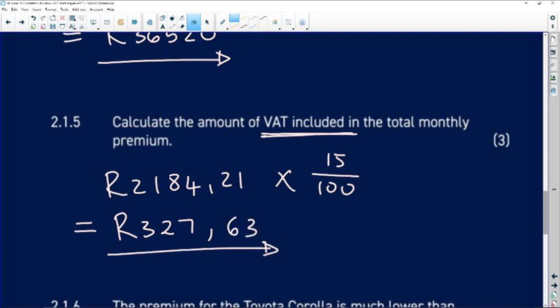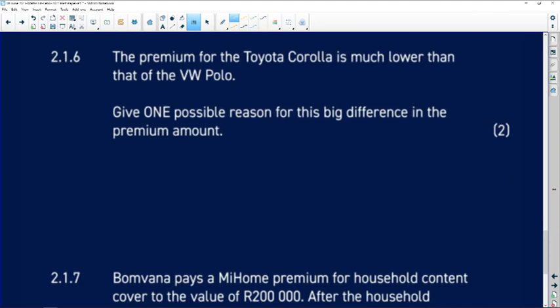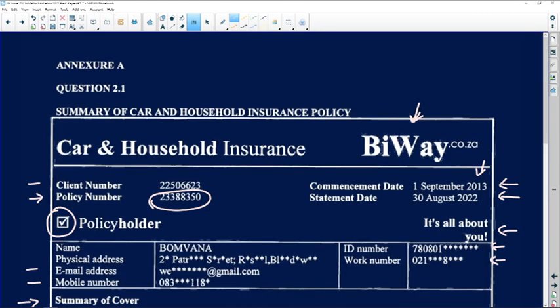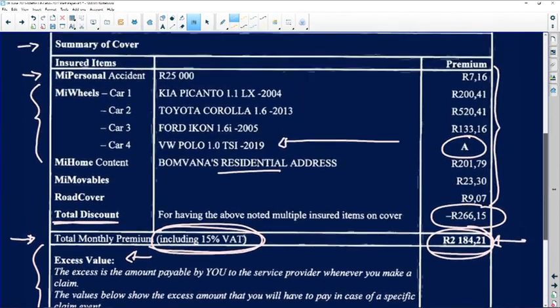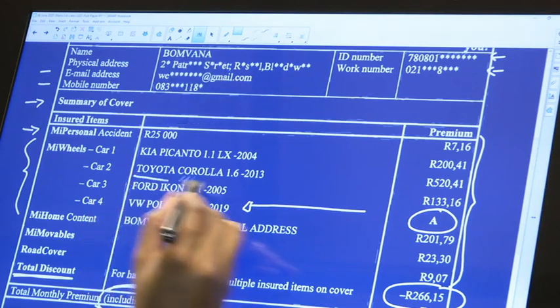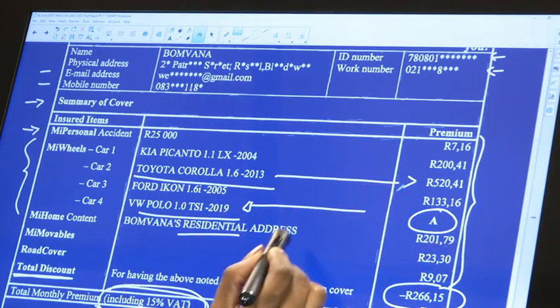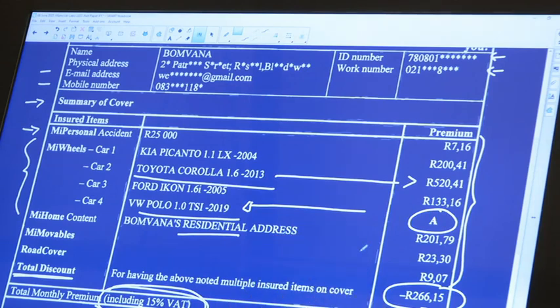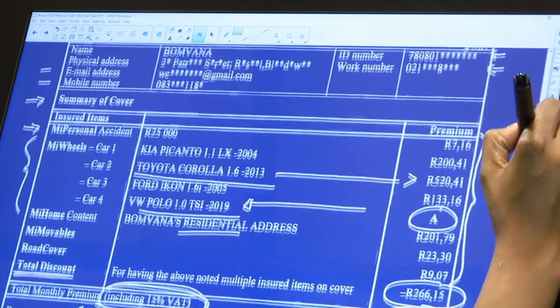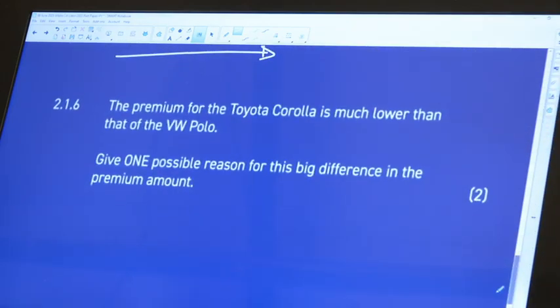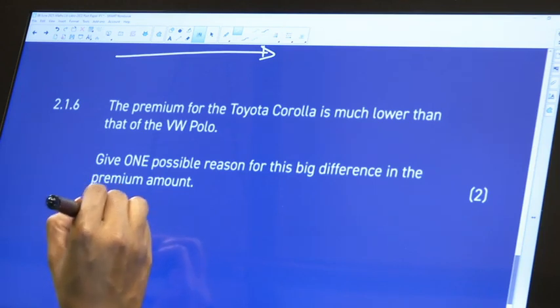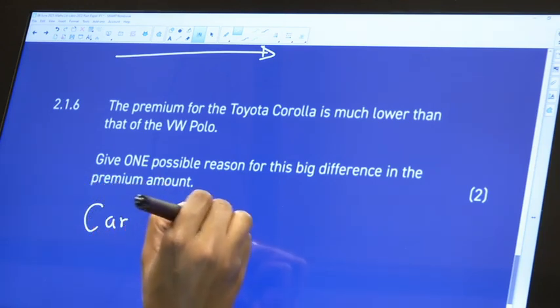Question 2.1.6: The premium for the Toyota Corolla is much lower than that of the VW Polo. The Toyota Corolla is R520 and the VW is the value we calculated for A. It is true. Give one possible reason for this big difference in the premium amount: it could be the car make or the car model.